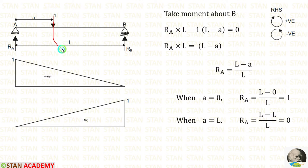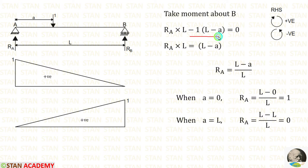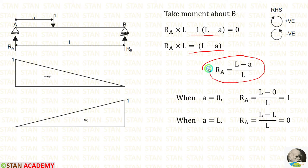The unit load is acting towards point B in the anticlockwise direction, so it will be negative. For the distance, we have to take this distance, which is L minus A. So, minus 1 into (L minus A). We can take minus 1 into (L minus A) on the right side — it will become positive. Finally, we get R_A equal to (L minus A) by L.